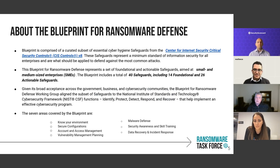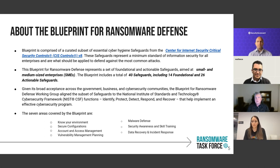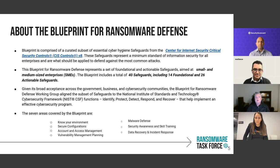The blueprint is comprised of controls from the CIS Center for Internet Security, very much focused on the SMB. Key areas include knowing your environment, how to configure things in a secure way, account and access management, vulnerability management — which is one of the key foundations — malware defense, security awareness and skill training, data recovery, and incident response. Those are seven areas foundational to any good program, and the blueprint tries to focus on those in a way that can help you combat ransomware and build resilience.